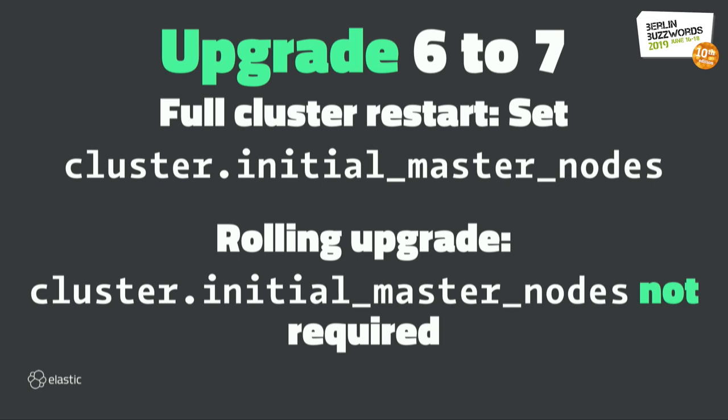When upgrading from version 6 to 7 with a full cluster restart, you do need to set 'cluster.initial_master_nodes'. With a rolling upgrade you don't, because you still have the minimum_master_nodes setting from before — new nodes in version 7 will figure out what the right settings were and know what the minimum master nodes basically are. There's no need to set it explicitly anymore because the cluster will know on its own.